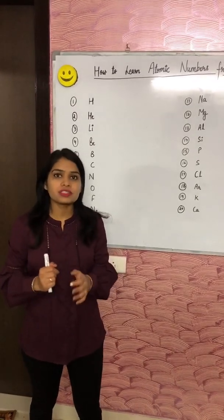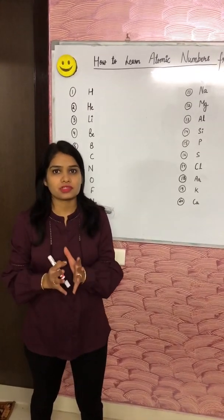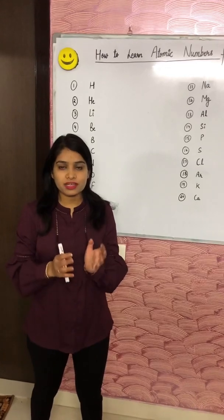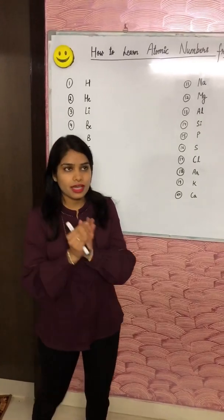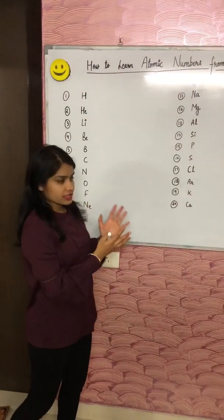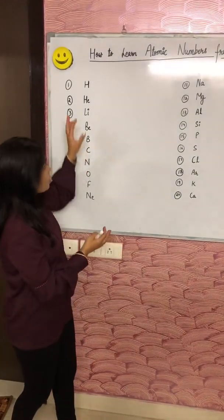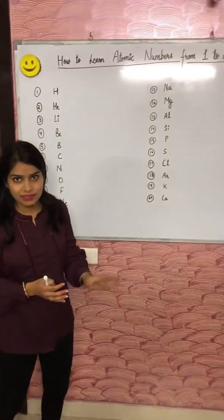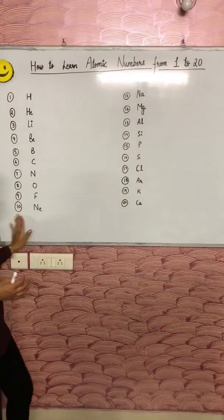Hello students, today we will study the very interesting topic of chemistry, that is atomic numbers. Here I am telling you how to learn the atomic numbers of elements from 1 to 20. I have divided it into two parts.